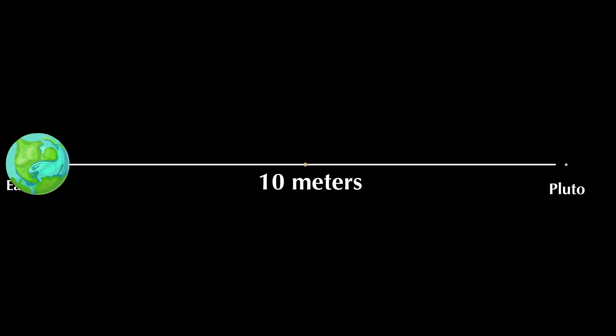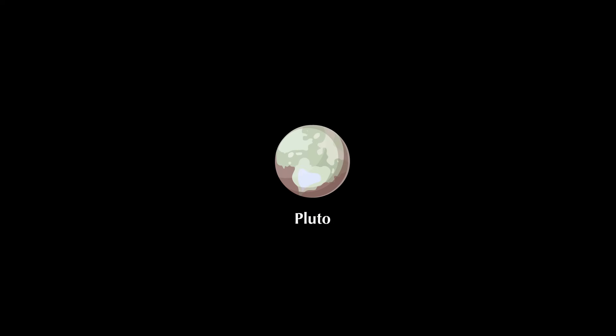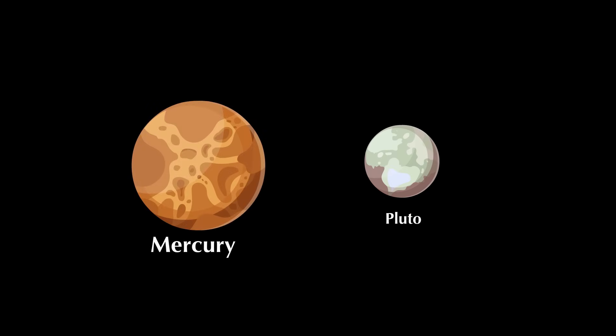If Jupiter was as large as the period ending a statement, Pluto would still be 10 meters away from Earth. Not only that, but Pluto is also tiny, less than half the size of Mercury, to be exact.